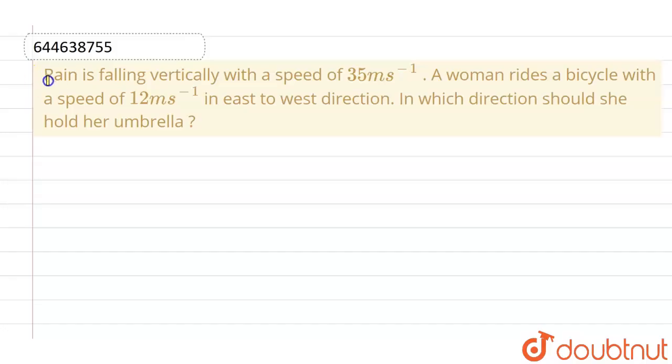Hello everyone, if we talk about this question, the given question is: rain is falling vertically with a speed of 35 meter per second. A woman rides a bicycle with a speed of 12 meter per second in east to west direction. In which direction should she hold umbrella?